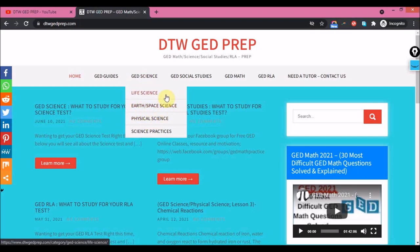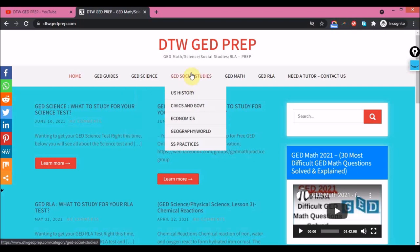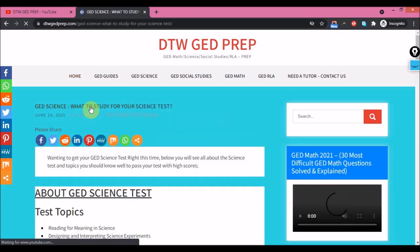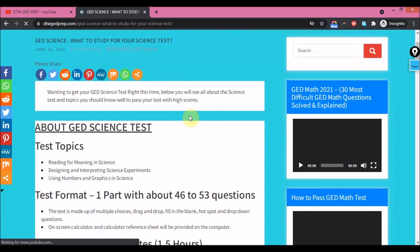In GED Science, it is divided into three: your Life Science, Earth and Space, and Physical Science. If you go into all of this, you see summaries of each topic. Your Social Studies also has summaries of U.S. history, socialism, communism, capitalism, civics and government, and all that. You click on it and it takes you there. But today we are focusing on what to study for your Science test.